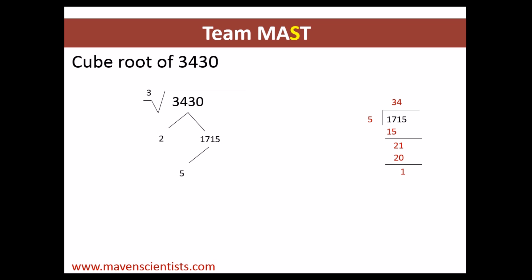Five times 4 is 20, giving a remainder of 1. We bring down the other 5, and 5 times 3 is 15, so the remainder is 0. We clearly know that 5 times 343 gives 1715.